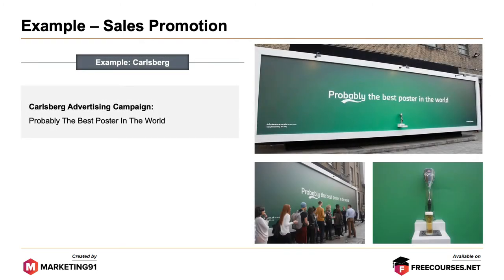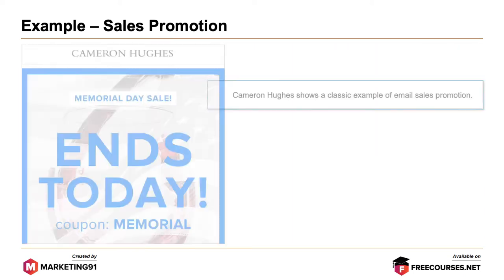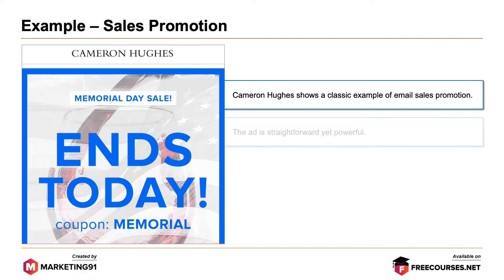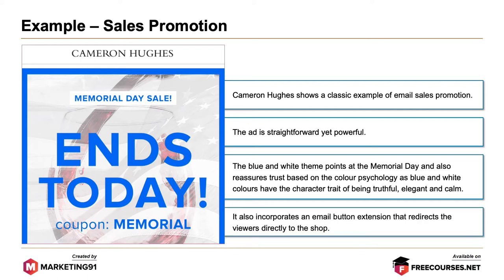Next example: Carlsberg advertising campaign — 'Probably the best beer in the world.' The people around the ad were able to pour themselves a Carlsberg directly from the poster, which was installed with a Carlsberg tab and a glass dispenser. Next example: Cameron Juices shows a classic example of email sales promotion. The ad is straightforward yet powerful. The blue and white theme points at Memorial Day and reassures trust based on color psychology, as blue and white colors have the character traits of being truthful, elegant and calm. It also incorporates an email button extension that redirects viewers directly to the shop.